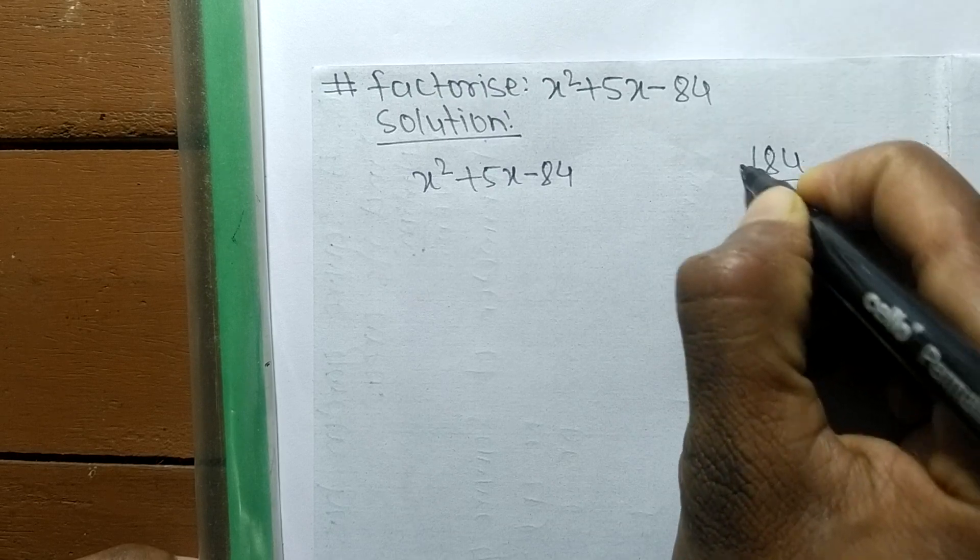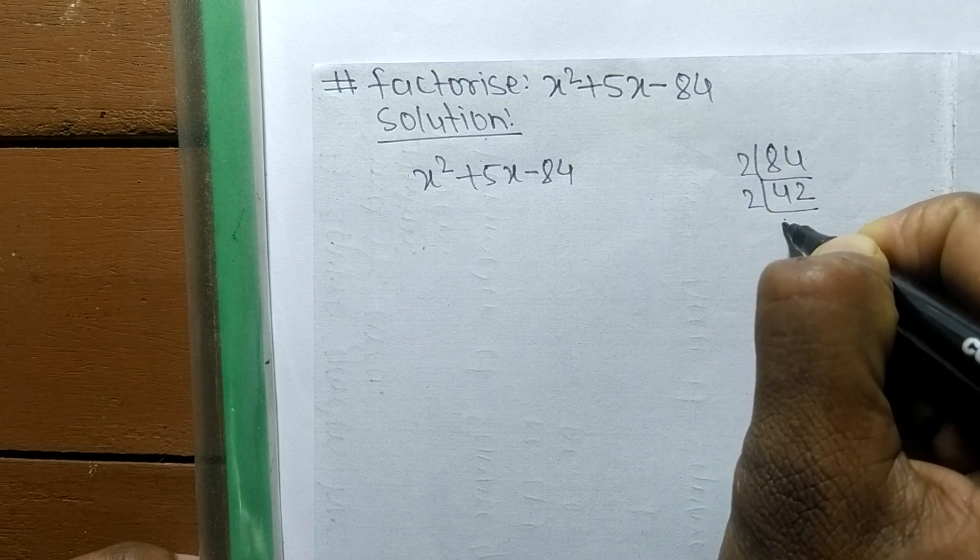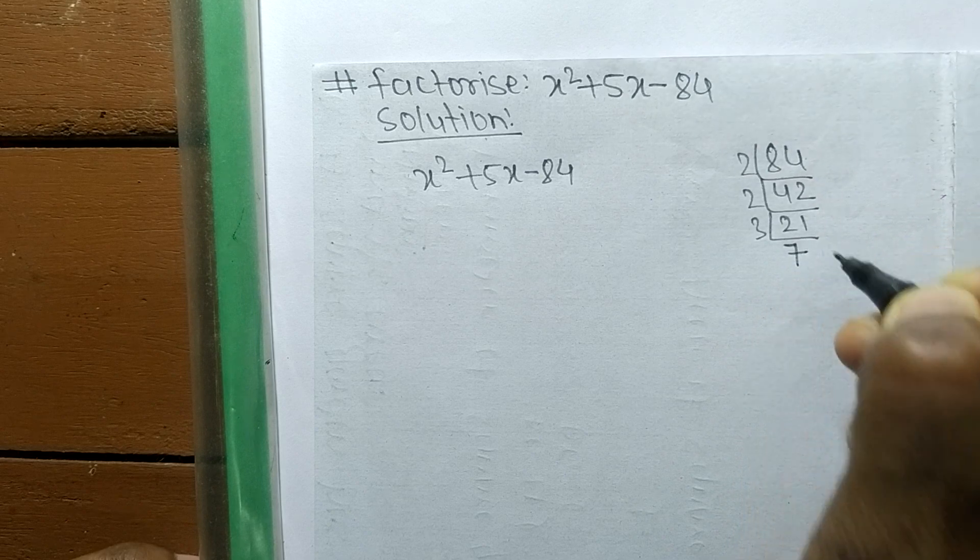The prime factorization of 84 is: 2 times 42 equals 84, 2 times 21 equals 42, and 3 times 7 equals 21.